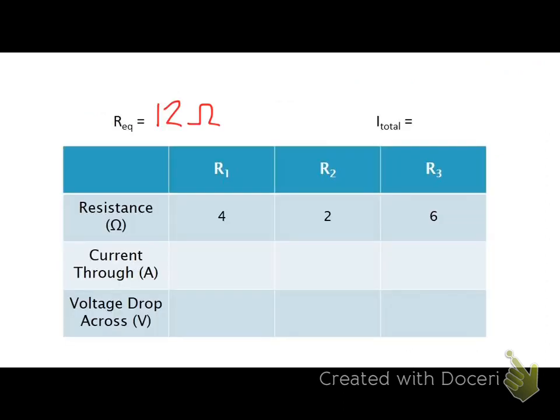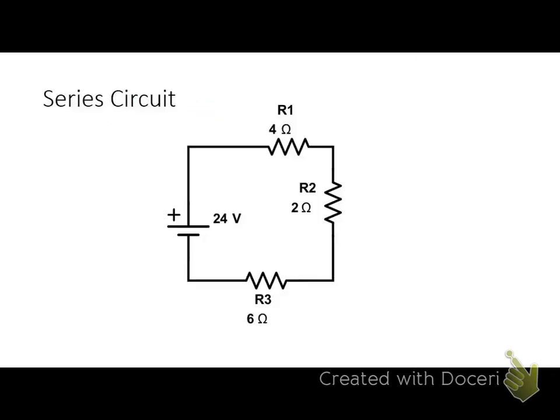Now I can use this equivalent resistance to find the total current coming out of the battery, using good old Ohm's law, V equals IR. So the voltage of the battery equals the current coming out times the equivalent resistance. If I'm dealing with a 24 volt battery, then current is just going to be V over R, which will be 24 volts divided by the 12 ohms. And I'm pretty good at that in my head as well. That's just 2 amps.